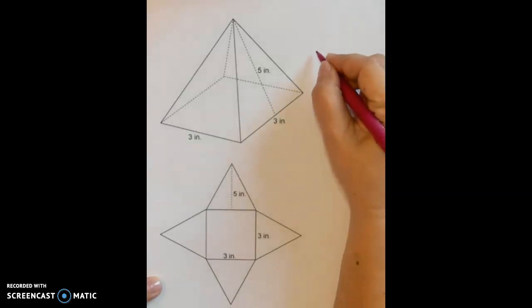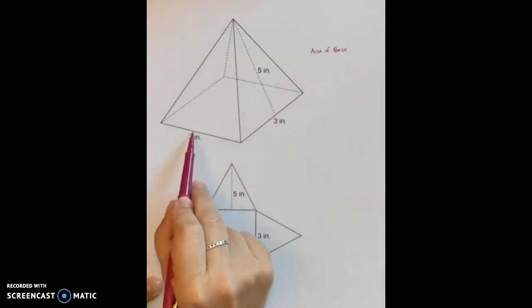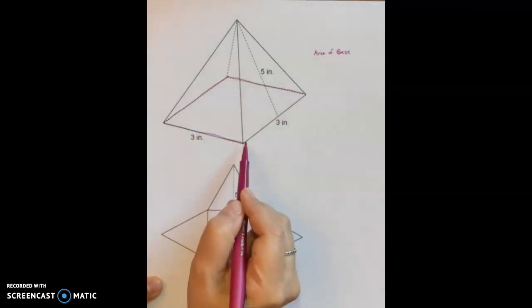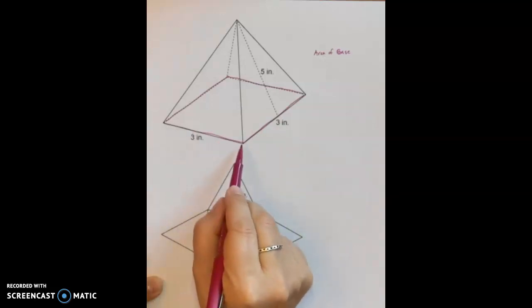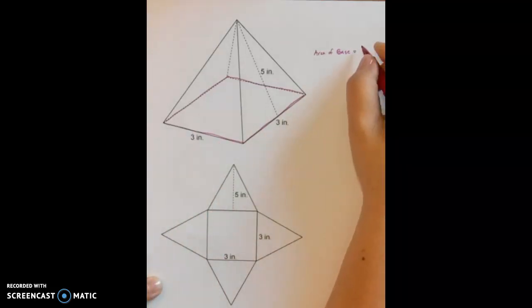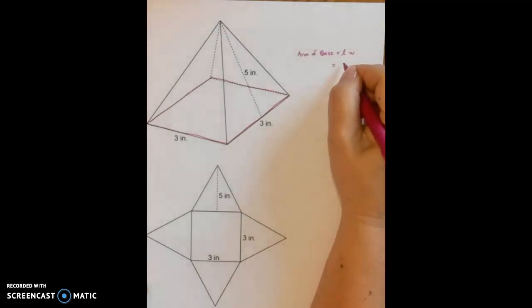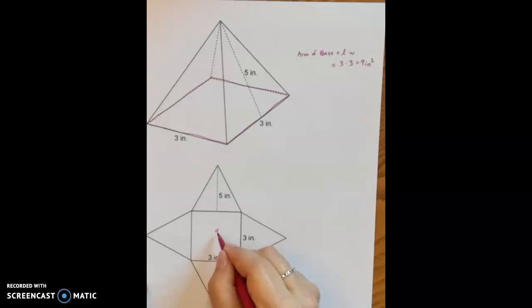Okay, so remember that we're going to figure out the area of each individual side. Now we have the base which is a square. I can tell it's a square because I'm going to just outline the base here. We can tell it's a square because this side is labeled 3 and this side is also labeled 3. In order to find the area of a square we need to do length times width. In this case that is 3 times 3, or 9 square inches.